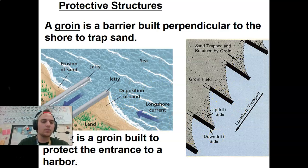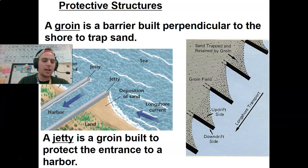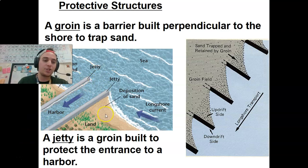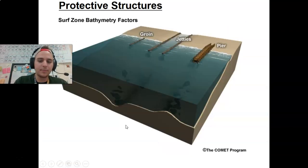A jetty is like a groin — it's a groin built to protect the entrance to a harbor. So if you've got a groin here and a groin right next to it with an area for ships to come in and out, these are technically called jetties.